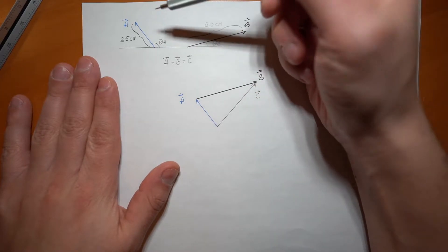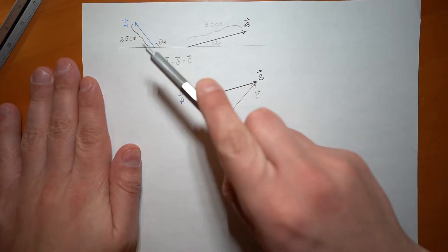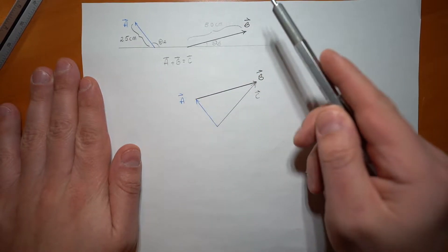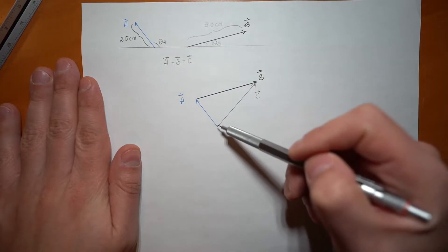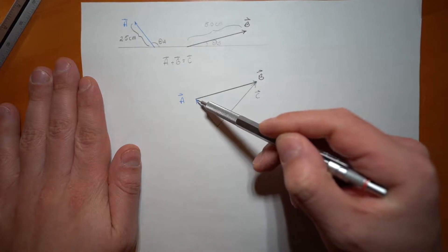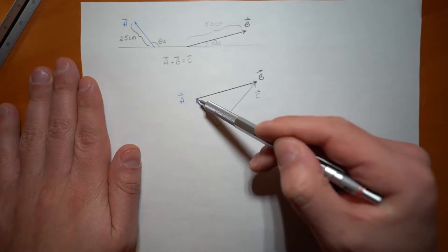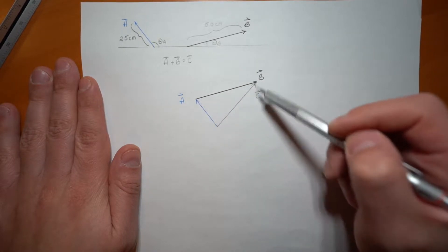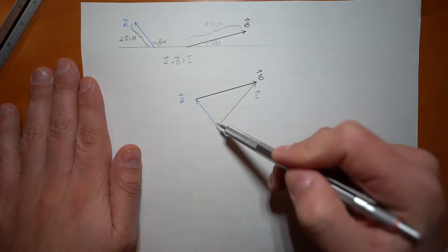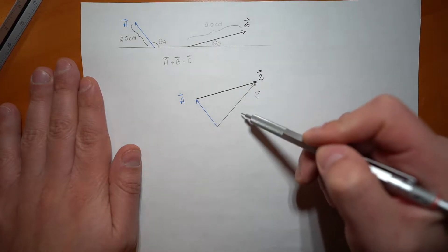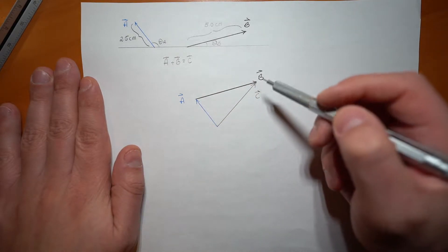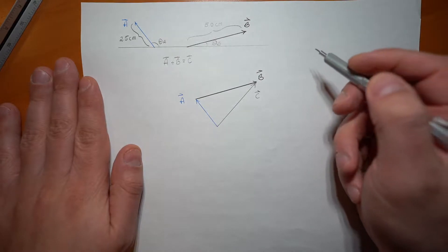We just saw in a previous video the first method for adding vectors graphically. We had some vector A and some vector B, and we added them through the tip-to-tail method. So we started at some original position, then took the tip of A and connected it to the tail of B, and got a resultant vector C. See the video in the description below. We're going to do it a different way now, using what's called the parallelogram method.